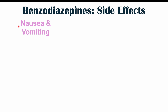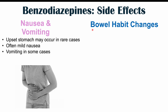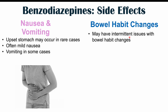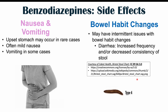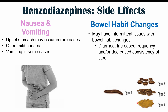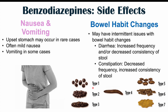Nausea and vomiting may occur in rare cases, often as mild nausea, with vomiting in some cases. Bowel habit changes can also occur — either diarrhea (increased frequency or decreased consistency of stool, types 5-7 on the Bristol stool chart) or constipation (decreased frequency or increased consistency of stool, types 1-3). Some benzodiazepines are more associated with one or the other, and some patients alternate between both.